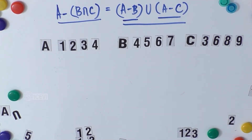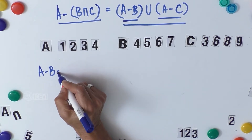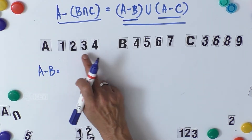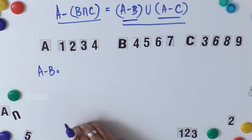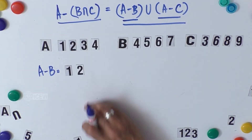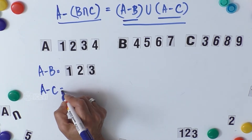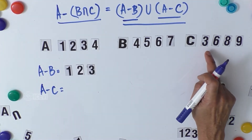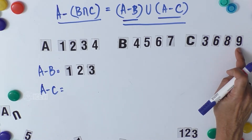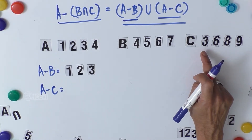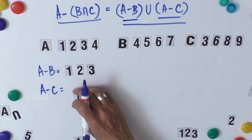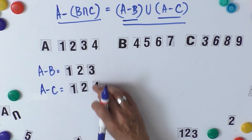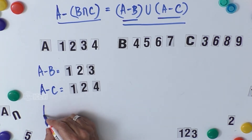A minus B is the objects of A not found in B. From A = {1,2,3,4} and B = {4,5,6,7}, elements 1, 2, and 3 are not in B, so A minus B = {1, 2, 3}. For A minus C: C = {3,6,8,9}, so 3 is the only element of A found in C, making A minus C = {1, 2, 4}.